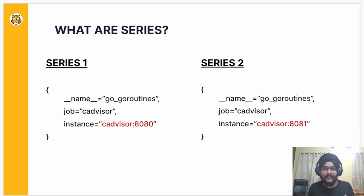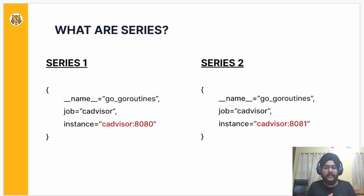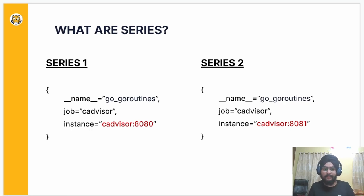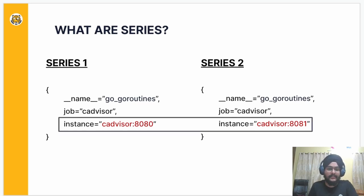What are series? Series are basically sets of labels. Now if you change one label or even its label value, it's a completely new series in the Prometheus data model. For example, the third label over here, which is instance, has its value changed towards the right. This leads to a completely new series for Prometheus.